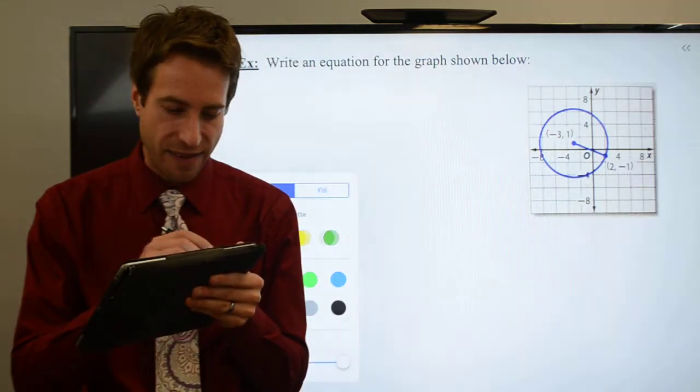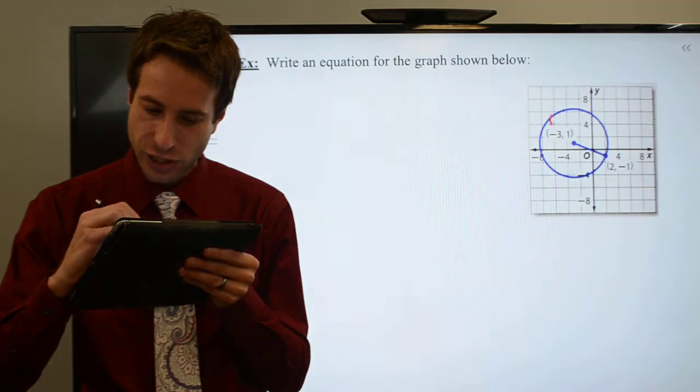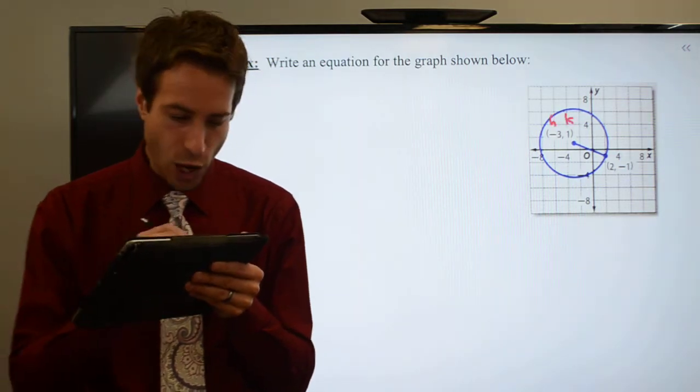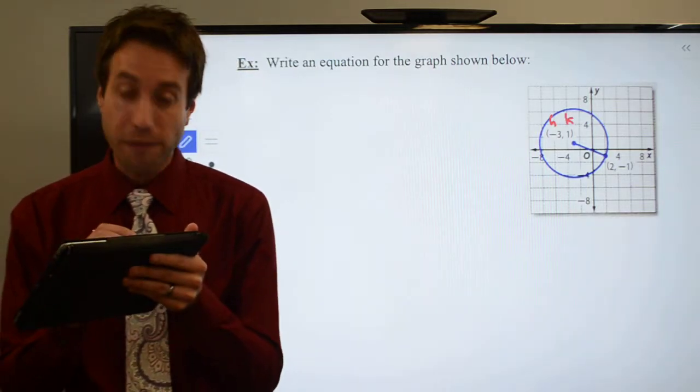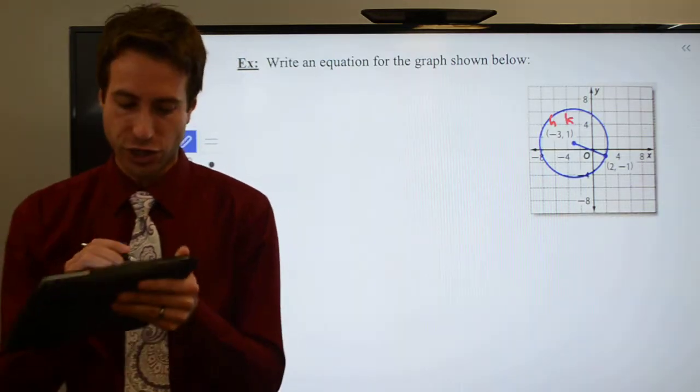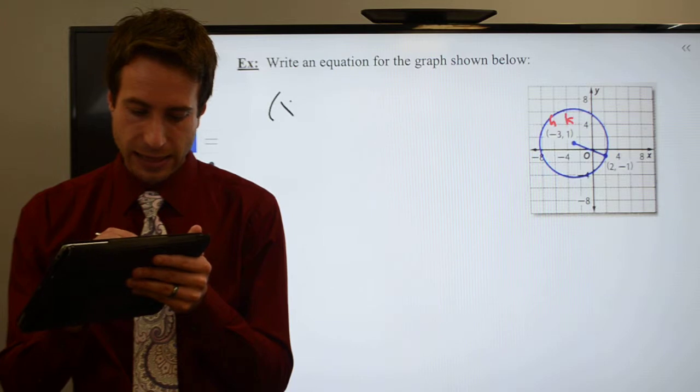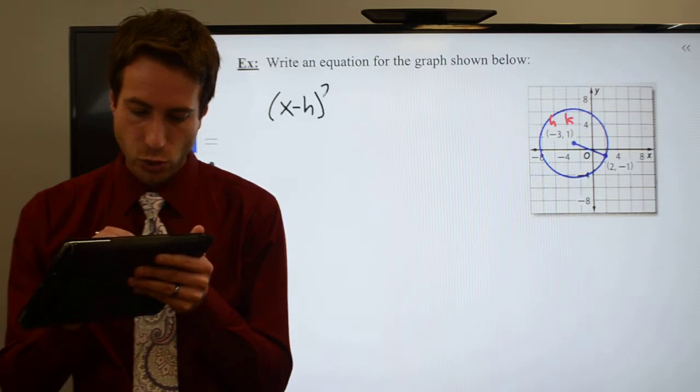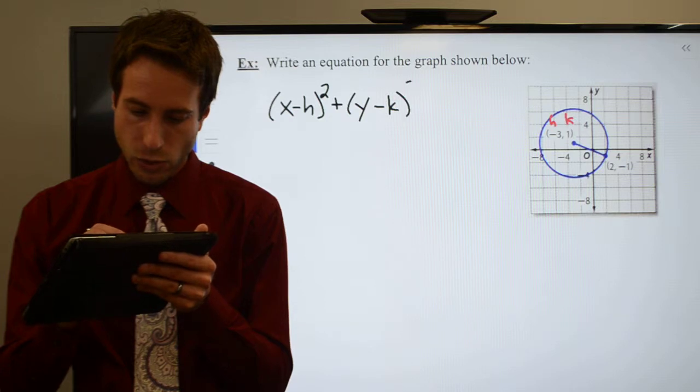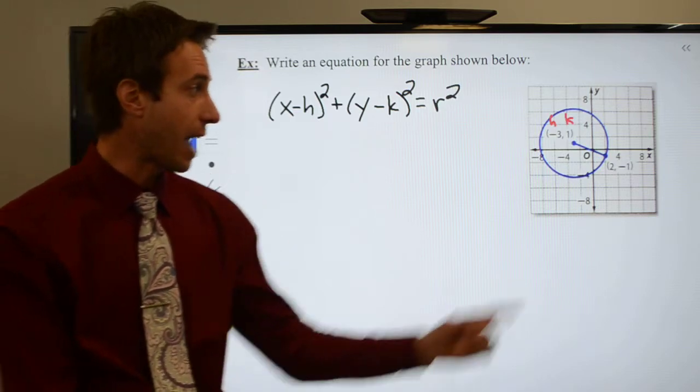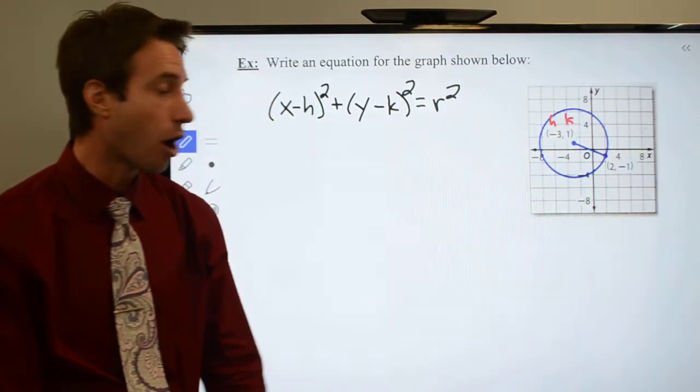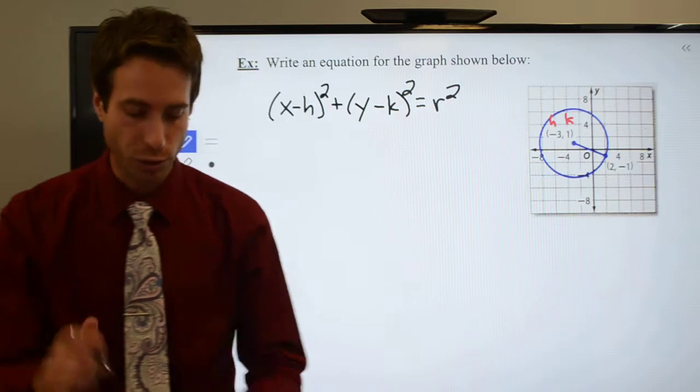Well right away then I know that I have a value of h and k which means that the equation I'm going to need off the formula sheet, it comes right off the formula sheet, just look at it. It's x minus h squared plus y minus k squared is equal to r squared. And we might as well just do it right now, I already know what h and k are so we're just going to go ahead and throw those guys in there.